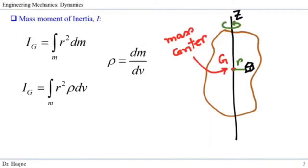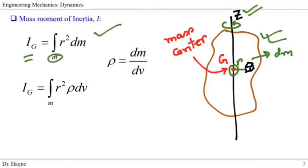How do we determine mass moment of inertia? If we have a body rotating about an axis Z that goes through its mass center, we can take any small amount of mass dm at a distance r from axis Z. The mass moment of inertia is defined as the integration over the entire mass of r² dm. This is called the second moment because of the r². Using density ρ = mass/volume, we can rewrite this as the triple integration of r² · ρ · dV over volume.